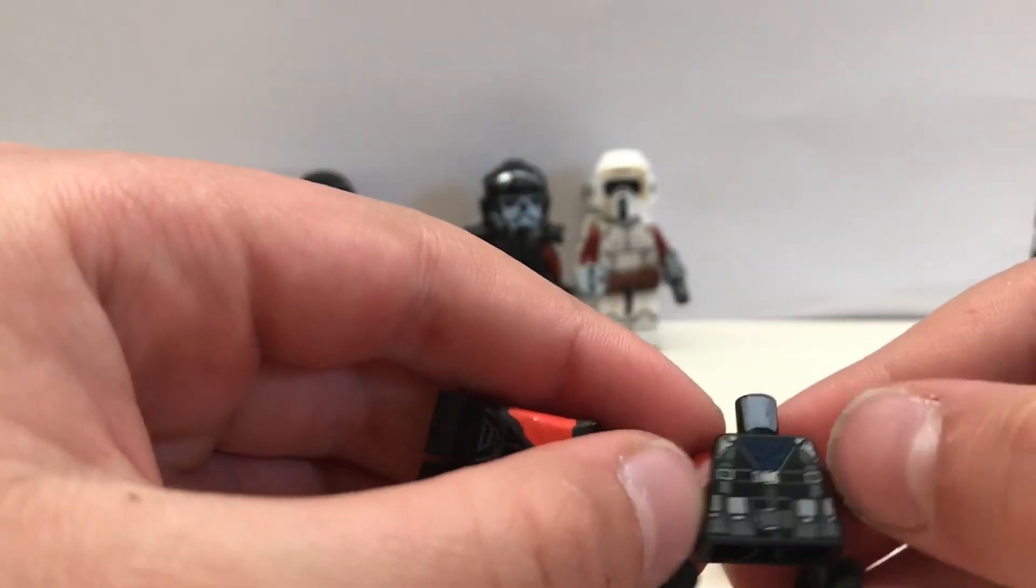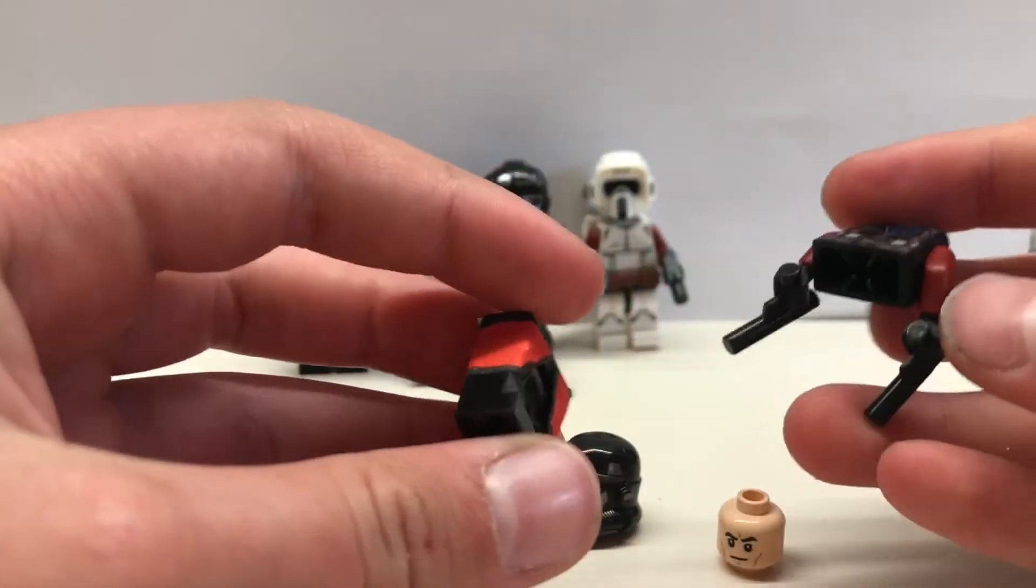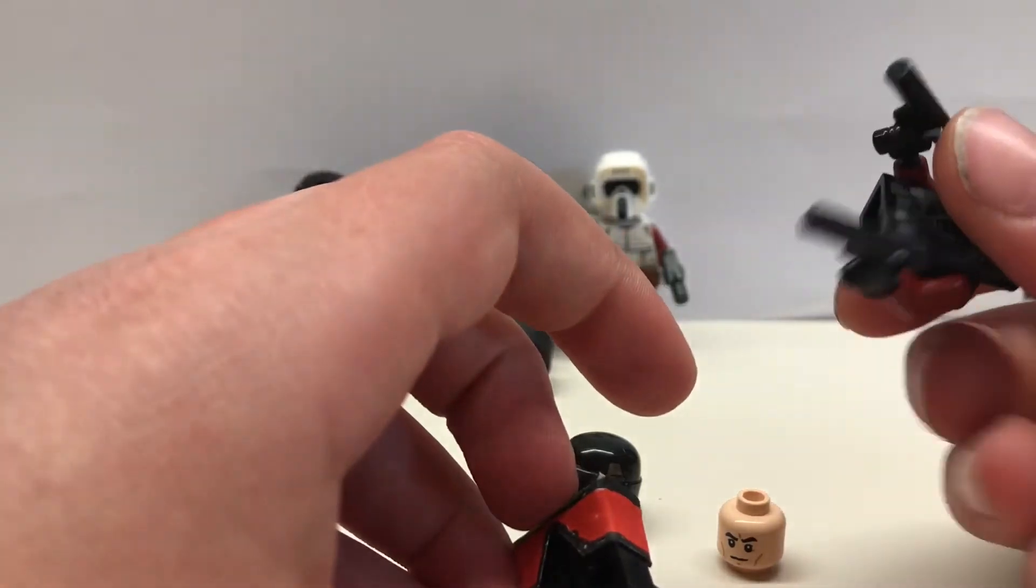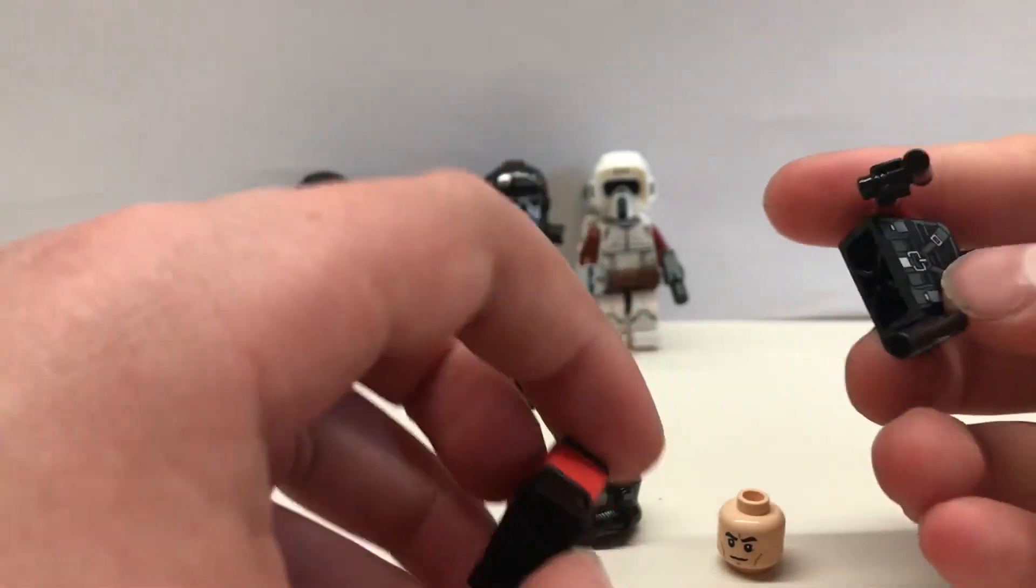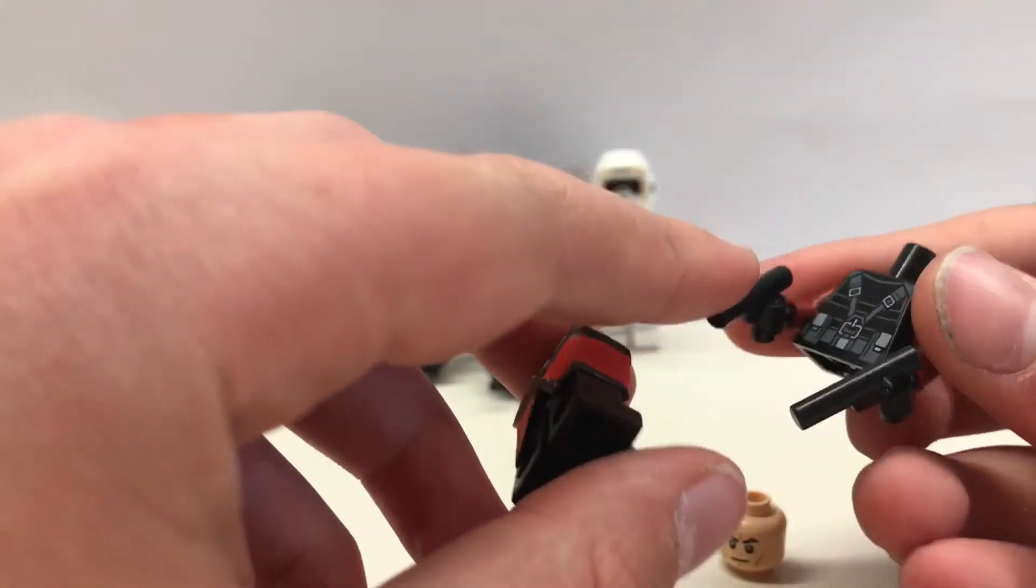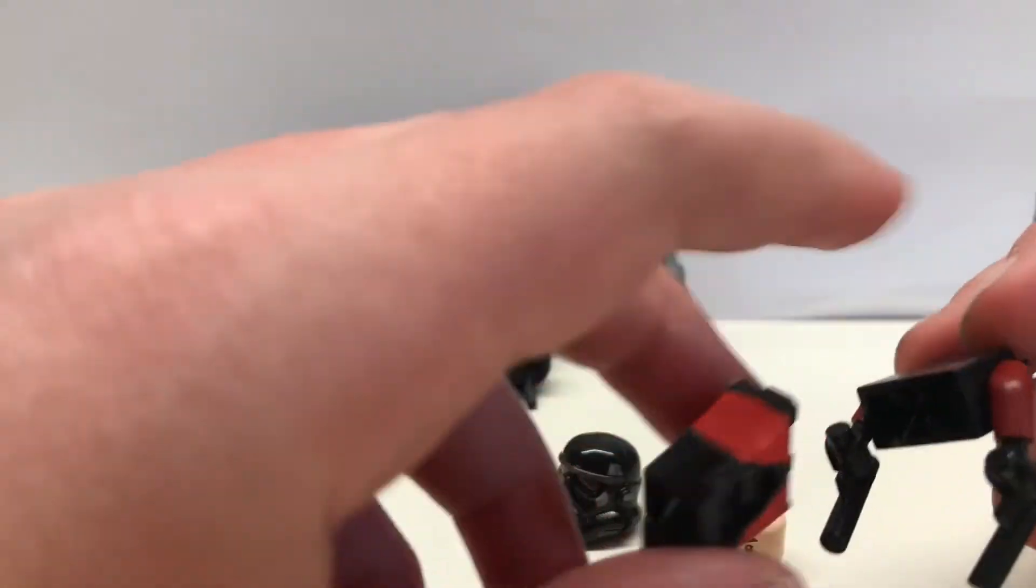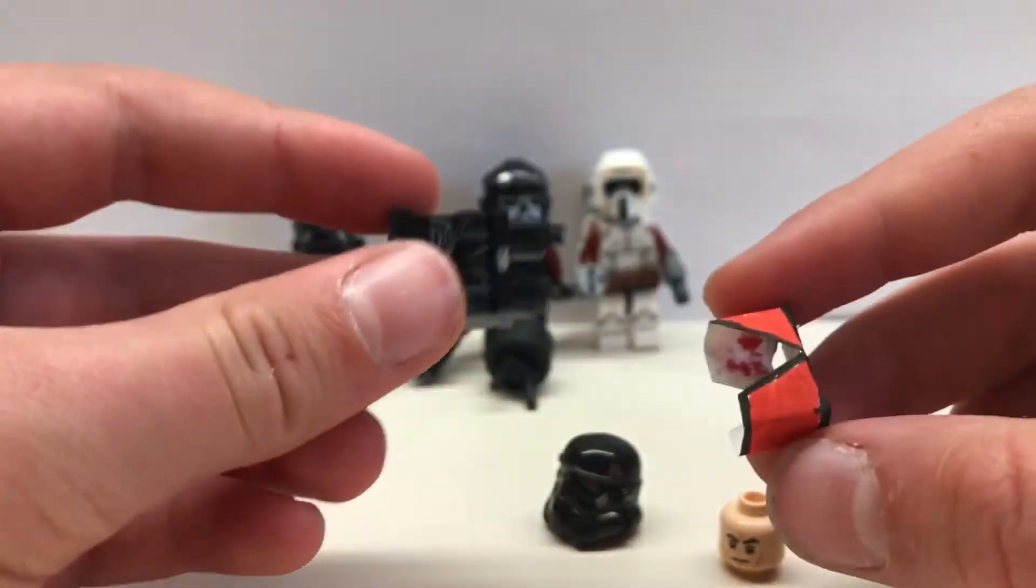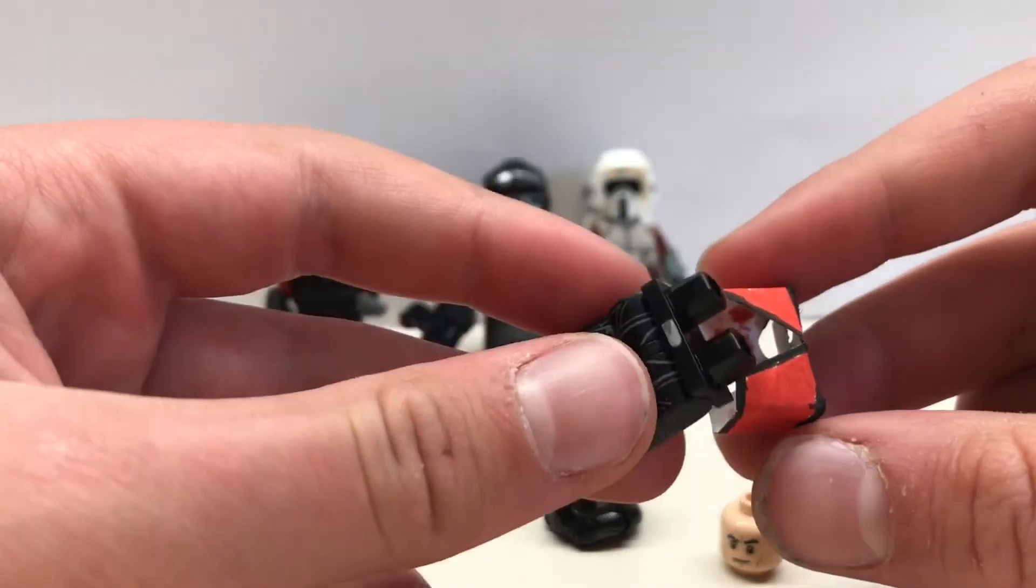And then this piece, this torso piece which is used in the Jurassic Park or Jurassic World sets, two black pistols and dark red arms. This custom camera that I made and Death Trooper legs.